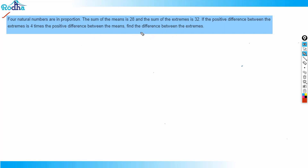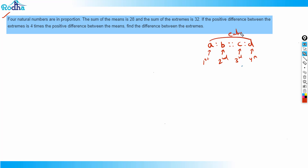In this question, when four numbers are in proportion, we write a:b = c:d. The first and fourth terms are called extremes, and the second and third terms are called means.